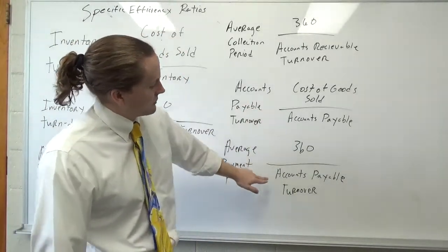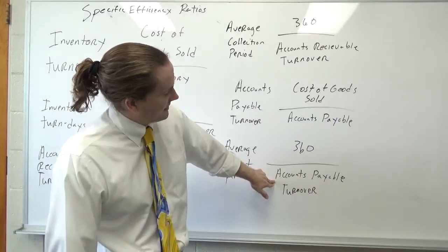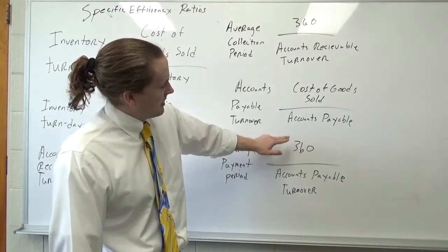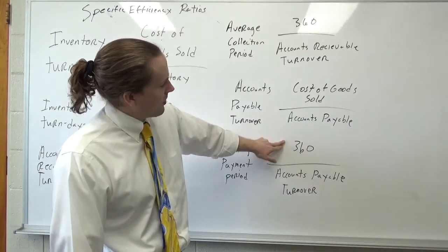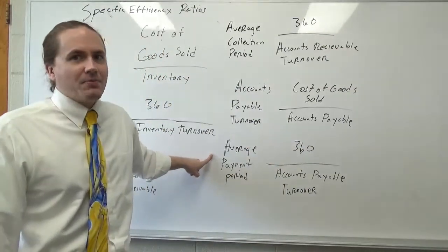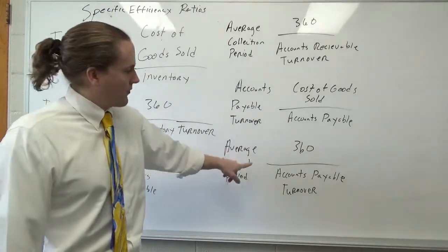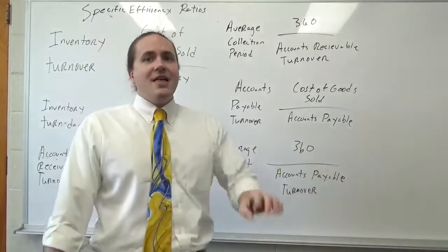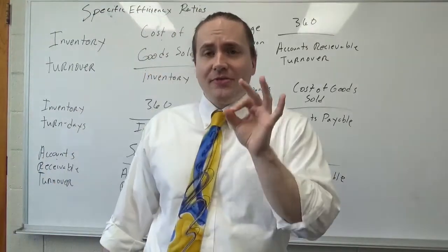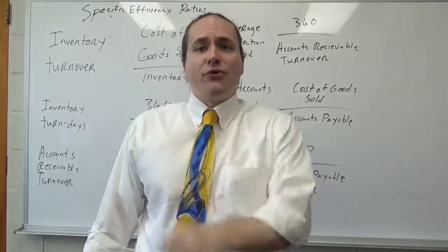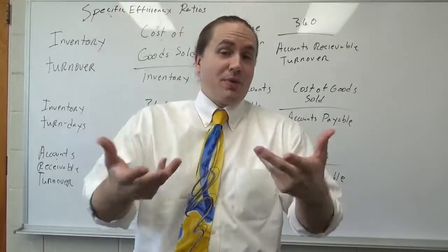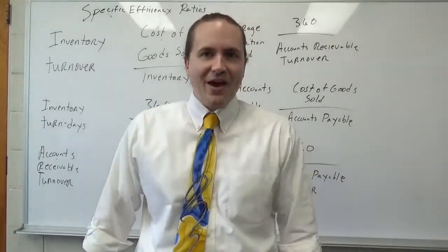This number is insanely useful because you stick that in the denominator of accounts payable turnover. In the numerator you stick 360, and this is the average payment period. If I have the number 45 here, that tells me that on average throughout the year it takes me about 45 days to pay my suppliers or any other accounts payable that I have.